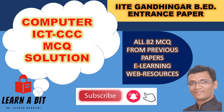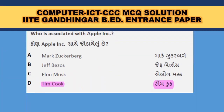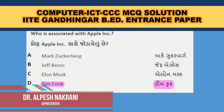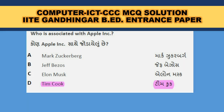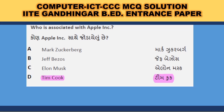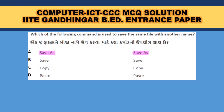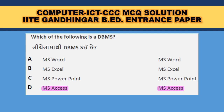Let us begin. Who is associated with Apple Incorporation? Tim Cook is the CEO of Apple, so Tim Cook is the correct answer. Which of the following command is used to save the same file with another name? Save As. Which of the following is a DBMS — that is, a Database Management System? MS Access is a DBMS program.